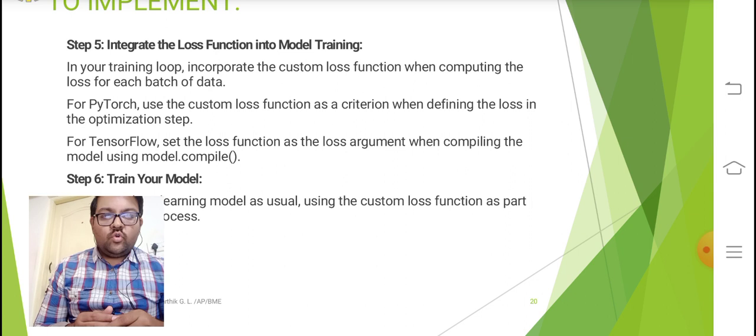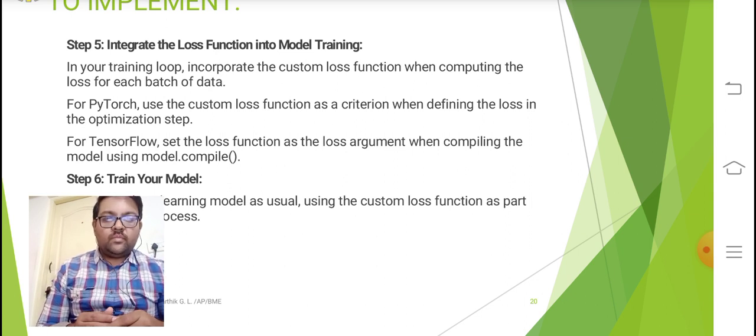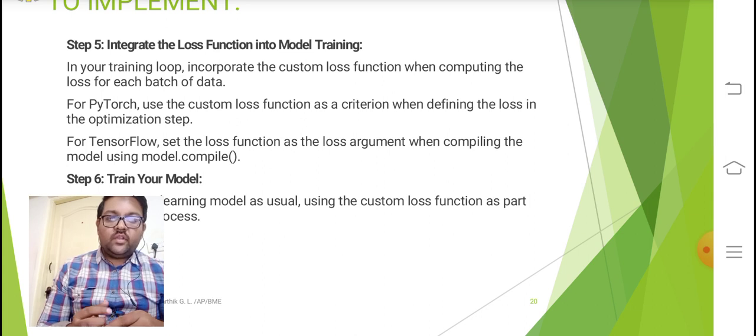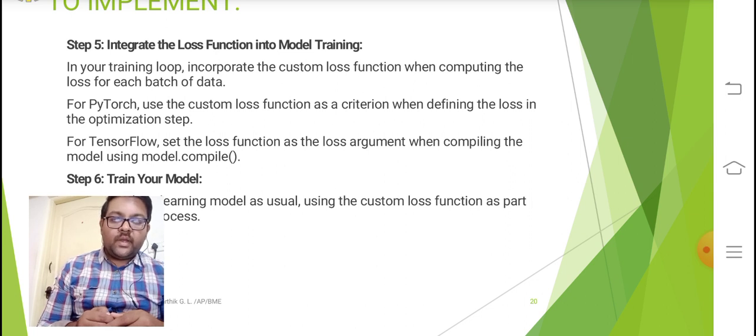In your training loop, incorporate the custom loss function when computing the loss for each batch of data. For PyTorch, use the custom loss function as a criterion when defining the loss in optimization step. For TensorFlow, set the loss function as a loss argument when compiling the model using model.compile function.